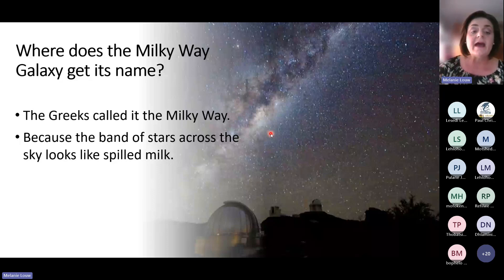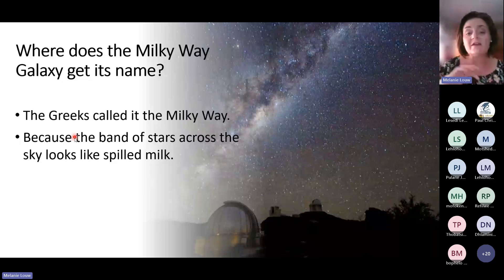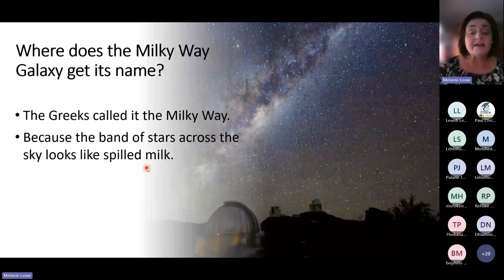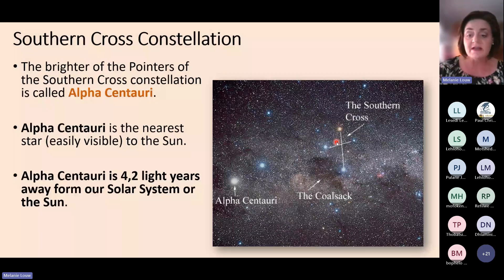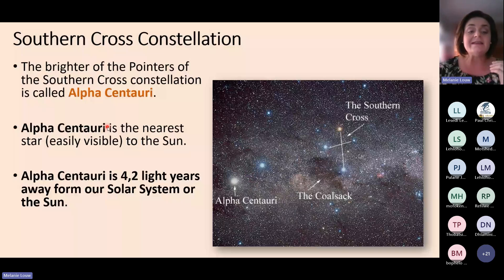That band of stars is called the Milky Way. The name was given by the Greeks because the band of stars looks like spilled milk. In the sky, some stars form patterns — for example, the pattern of four stars known as the Southern Cross. The Southern Cross has two pointers, and the brightest one is called Alpha Centauri, which is the nearest star to our sun. Alpha Centauri is about 4.2 light years away from our sun.